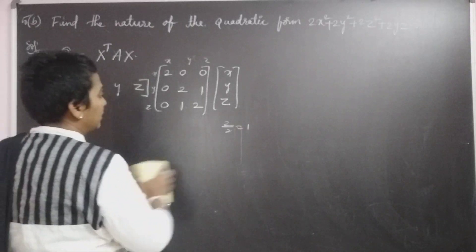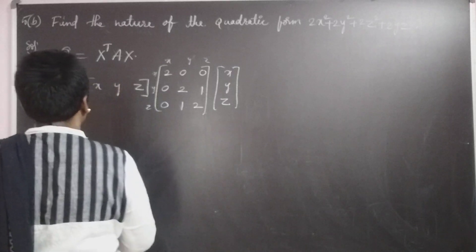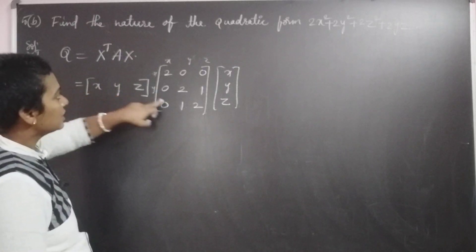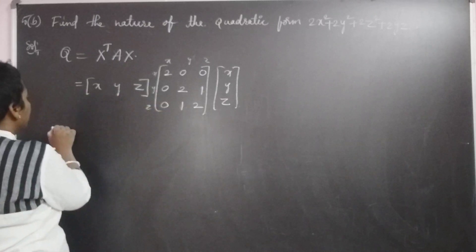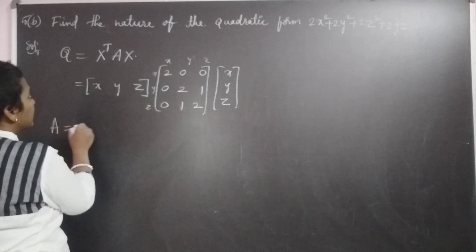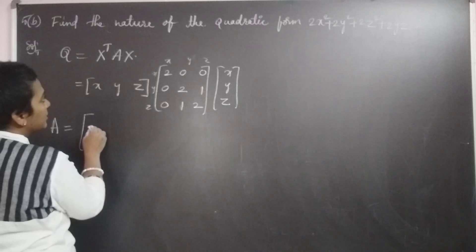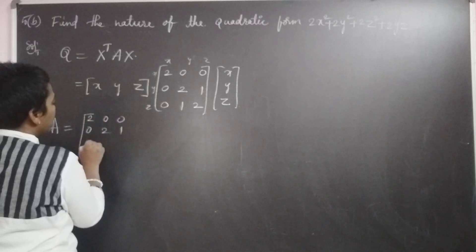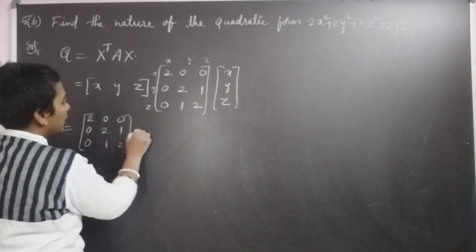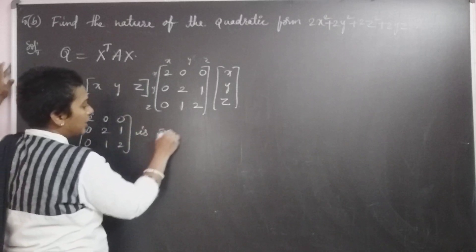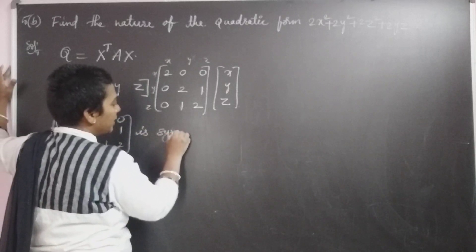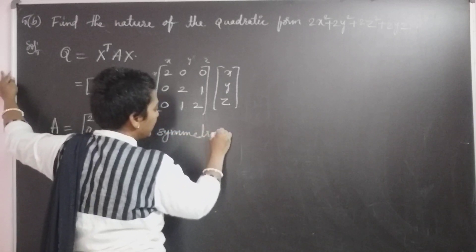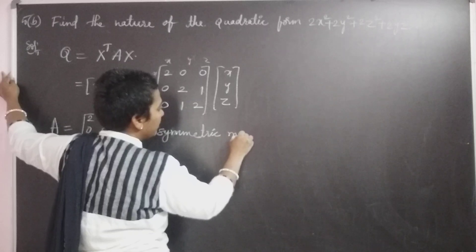We write the quadratic form as Q equal to x transpose A x, where A is a symmetric matrix: [2, 0, 0; 0, 2, 1; 0, 1, 2]. This is a symmetric matrix, meaning A transpose equals A.